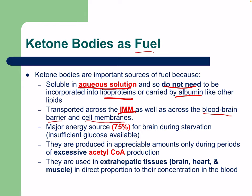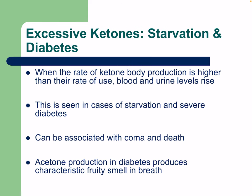Ketone bodies are approximately 75% of the major energy source for the brain during starvation when insufficient glucose is available. They are produced in appreciable amounts only during periods of excess acetyl-CoA production and used in extrahepatic tissues like the brain, heart, and muscle in proportion to their blood concentration. Excessive ketones in starvation or diabetes cause blood and urine levels to rise, which is detected clinically and can be associated with coma and death.